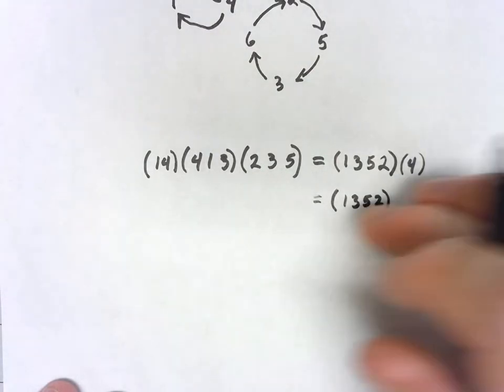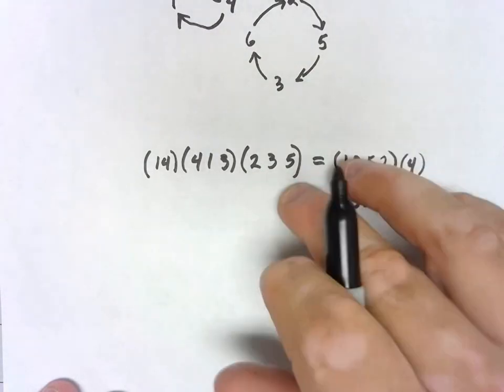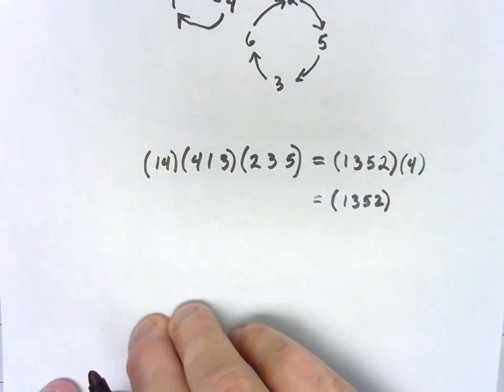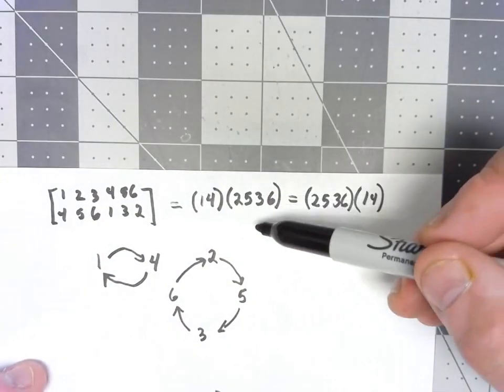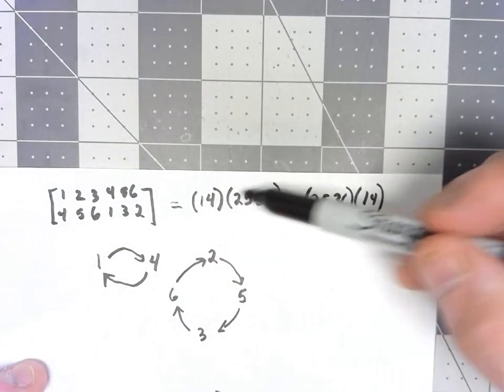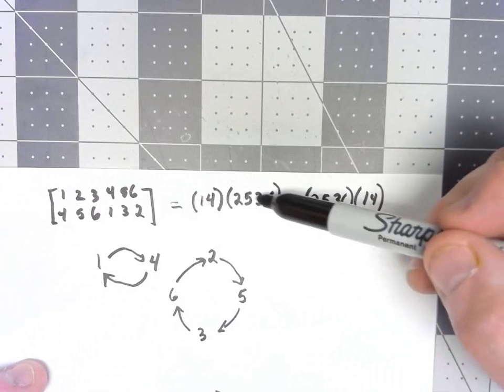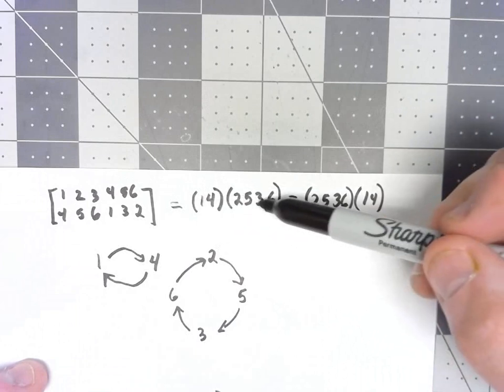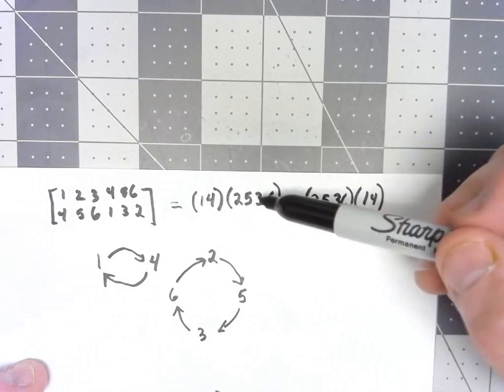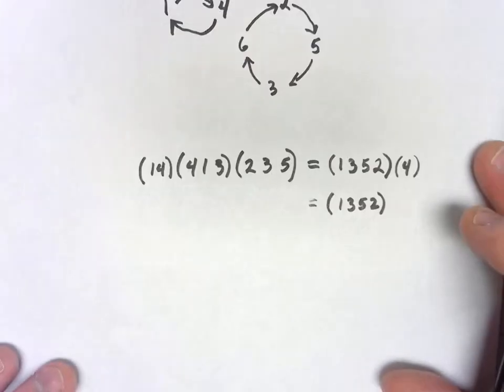Now, it's also worth noting, in this case, we just got a single cycle by multiplying those things out. But in general, like up here, we're going to get a product of distinct cycles. We'll get cycles that don't have anything in common when we multiply these together.